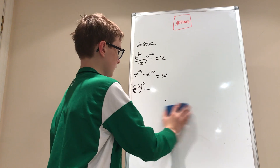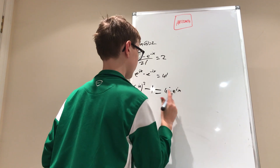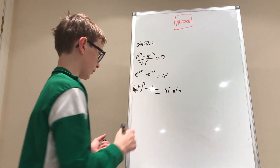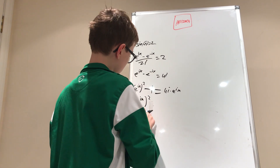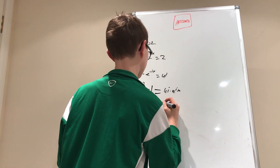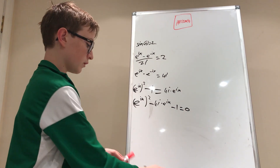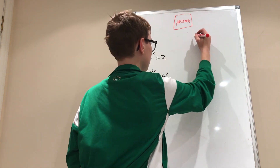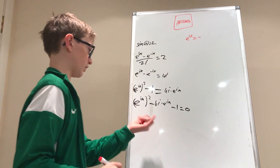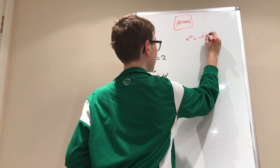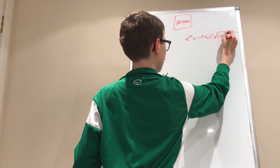We can use the quadratic formula since this is a quadratic in terms of e^(ix). Rearranging: e^(2ix) − 4i·e^(ix) − 1 = 0. Applying the quadratic formula with a=1, b=−4i, c=−1, we get: e^(ix) = (4i ± √((−4i)² − 4·1·(−1))) / (2·1).